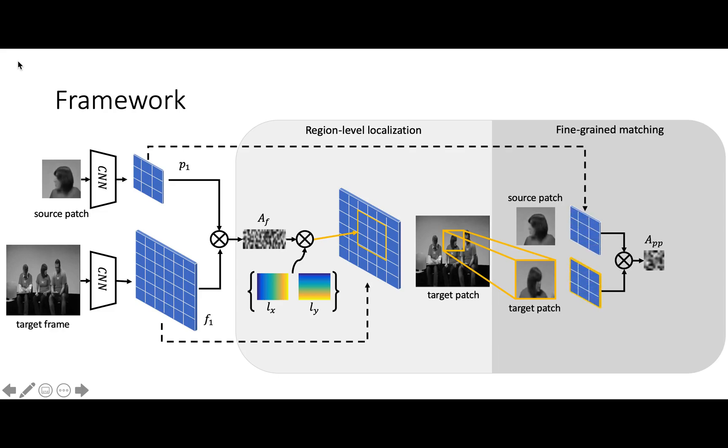We use the sub-affinity to warp the color channels of the source patch, where the differences between the predicted target patch and the ground-truth patch serve as the supervision signal.